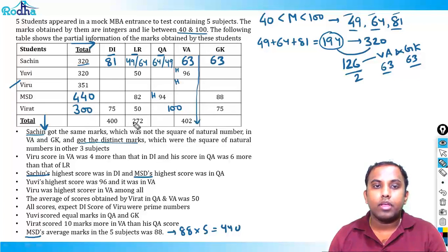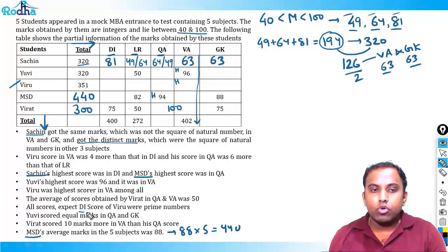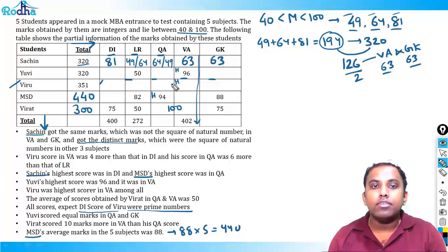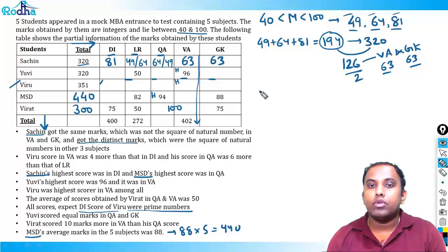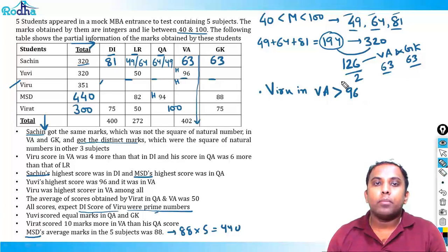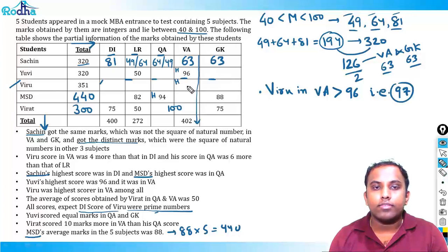All of Viru's scores except DI were prime numbers. Since Viru had the highest VA score among all, and UV scored 96 in VA, Viru's VA must exceed 96. It must also be prime. The only prime number greater than 96 in the range 40–100 is 97. So Viru's VA = 97.